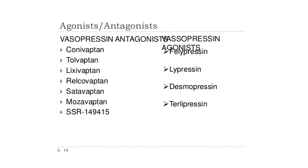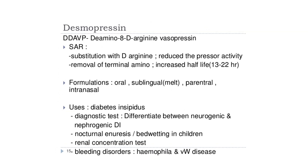Vasopressin antagonists include conivaptan, tolvaptan, lixivaptan, relcovaptan, satavaptan, mozavaptan, and SSR 149415. Agonists include felypressin, lypressin, desmopressin, and terlipressin.